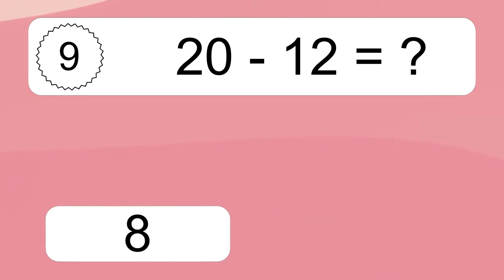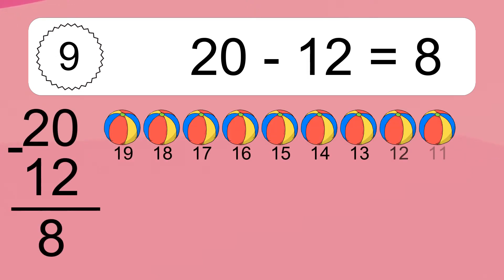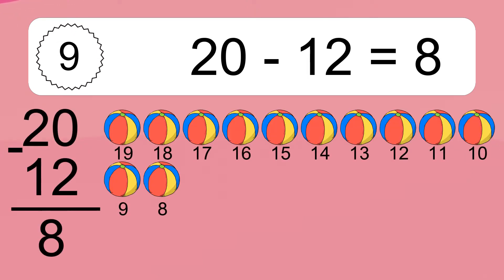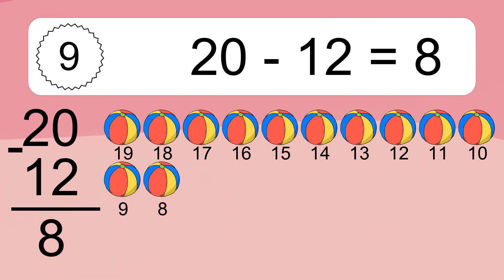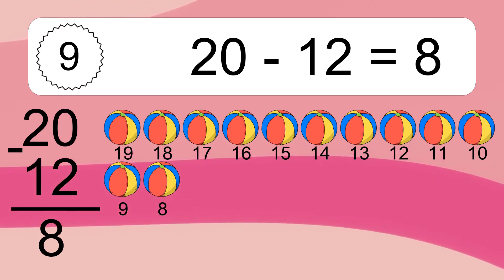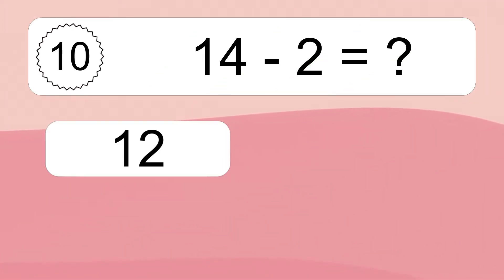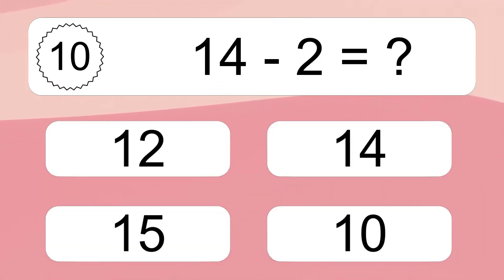20 minus 12 equals 8. Let's count it: 19, 18, 17, 16, 15, 14, 13, 12, 11, 10, 9, 8.